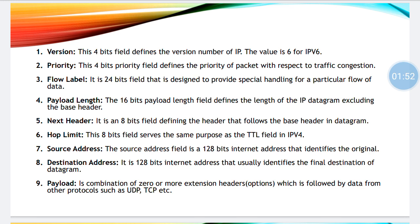Next header: the bit allocated for the same is 8 bits. It defines the following base header in the datagram. For example, the first packet has a particular header, so once this first packet is received by the receiver, who is the next header — that information is managed by next header.